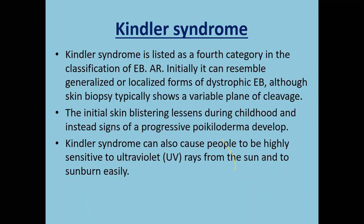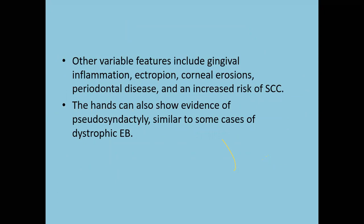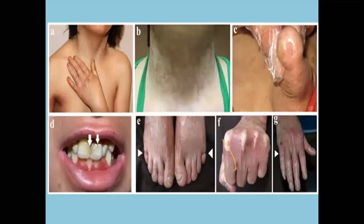Kindler syndrome is a mixed type of EB and is frequently seen in exams. It initially resembles a generalized or localized form of dystrophic EB, but later the blistering gives way to photosensitivity and poikiloderma. Other features are gingival inflammation, ectropion, corneal erosion, periodontal disease, and squamous cell carcinoma. Syndactyly or pseudosyndactyly and nail dystrophies can occur, along with mottled pigmentation on hands and feet.